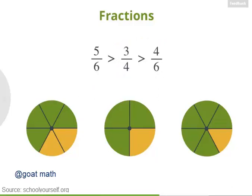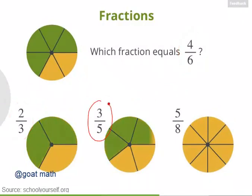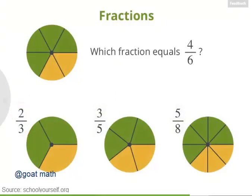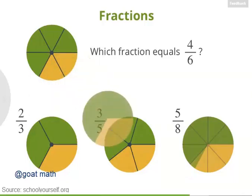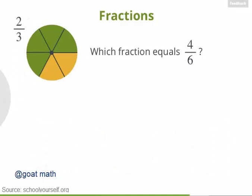Some fractions are the same size. Which of these fractions equals 4 sixths — is it 2 thirds, 3 fifths, or 5 eighths? All of these fractions are pretty close together, but only one is exactly equal to 4 sixths. 4 sixths equals 2 thirds. Putting 4 sixths on top of 5 eighths, you can see that 5 eighths is a little smaller, and 3 fifths is also slightly smaller than 4 sixths. Meanwhile, 2 thirds and 4 sixths are exactly equal. If we erase some of the dividing lines, the green region represents 2 thirds of the dot — so 2 thirds really equals 4 sixths.